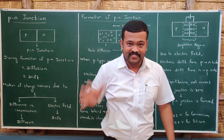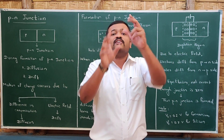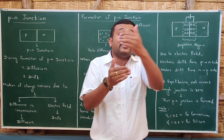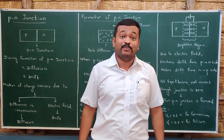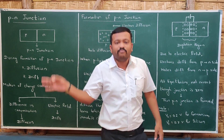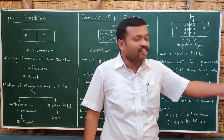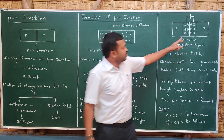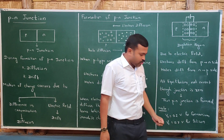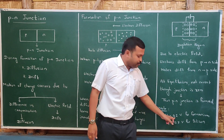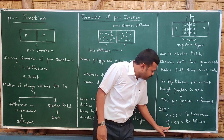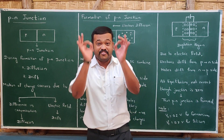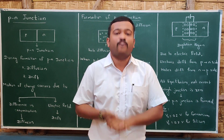To summarize: when P-type and N-type semiconductors are combined, first diffusion takes place due to the difference in concentration, creating the depletion region. An electric field is then created, causing minority charge carriers to drift — and that is how the PN junction is formed. The depletion region has a barrier potential which differs by material: for Germanium the barrier potential is 0.2 volts, and for Silicon it is 0.7 volts.